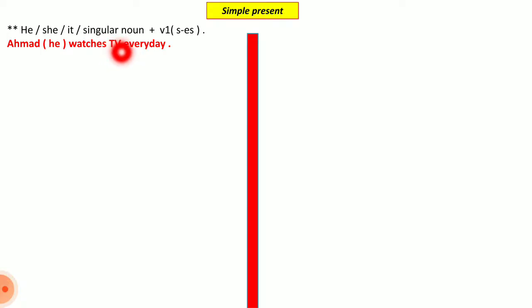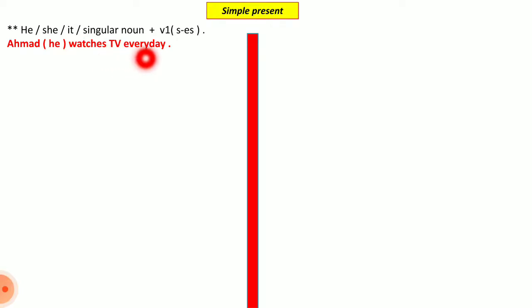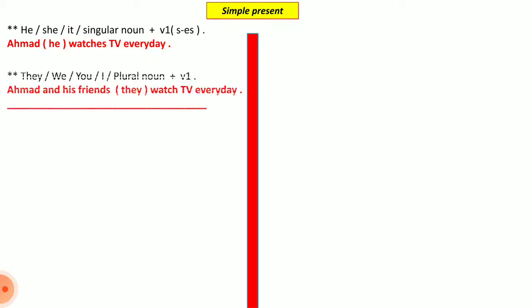We added 'es' to 'watch' to make 'watches.' Here, Ahmed can be replaced by the pronoun 'he,' so we can say 'Ahmed watches TV every day' or 'he watches TV every day.' That was the first group of subjects — singular nouns or he/she/it.